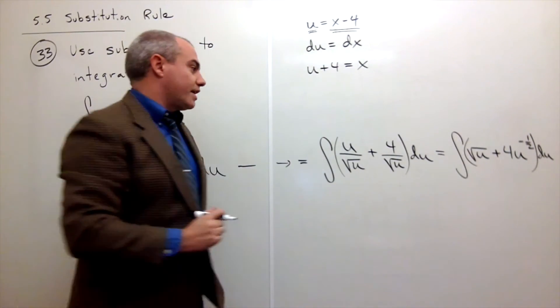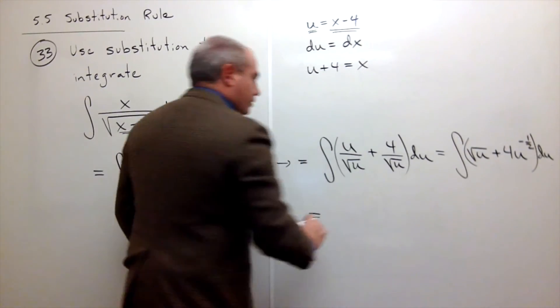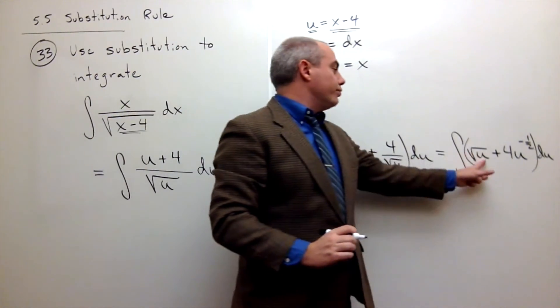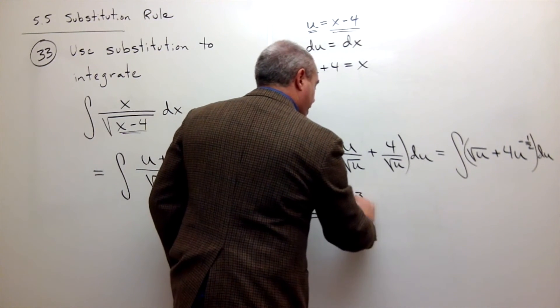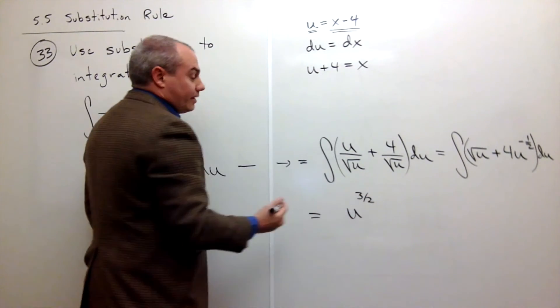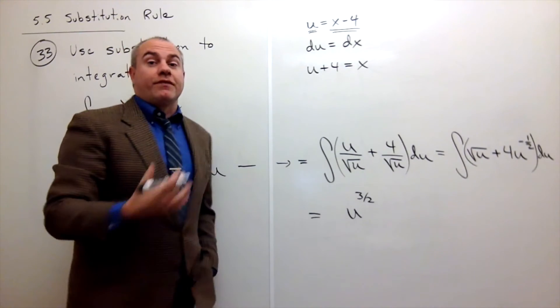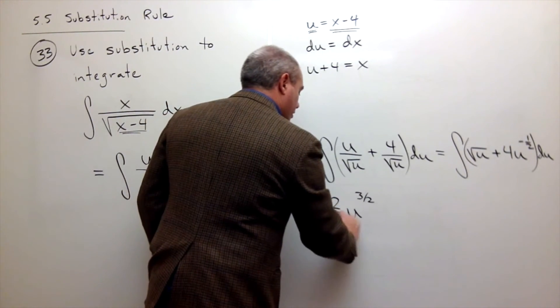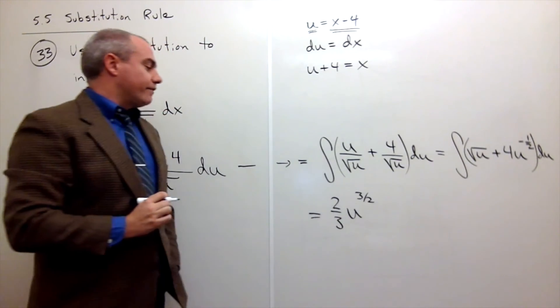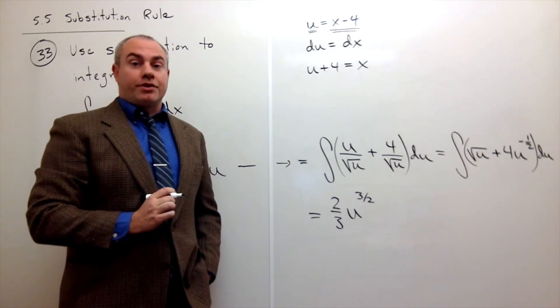Let's take an antiderivative. Antiderivative of u to the 1/2 power is u to the 3/2 power divided by 3/2. But dividing by 3/2 is the same as multiplying by 2/3. So I have 2/3 u to the 3/2 power.